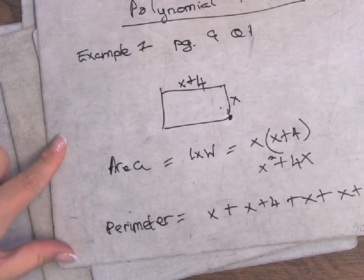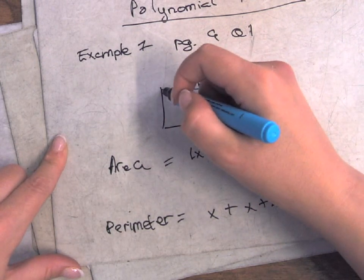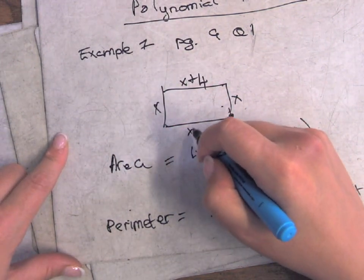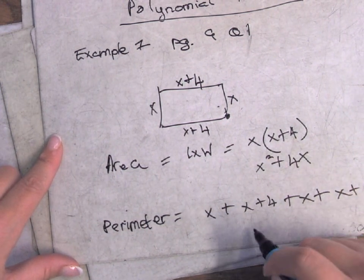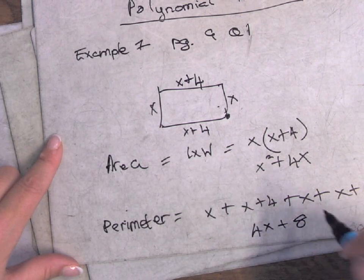So perimeter, you walk all around. So I started here, x plus x plus four plus x plus x plus four. Not into the calculator, 4x plus eight. Is that okay?